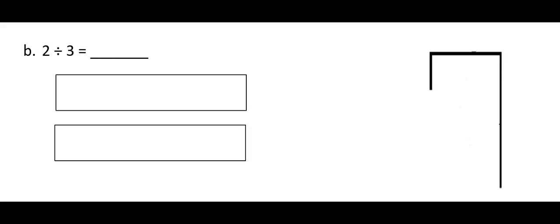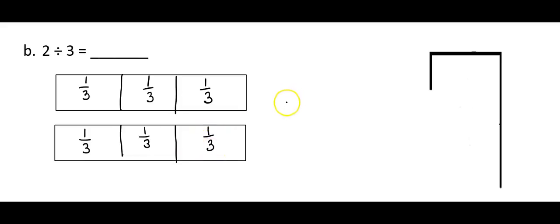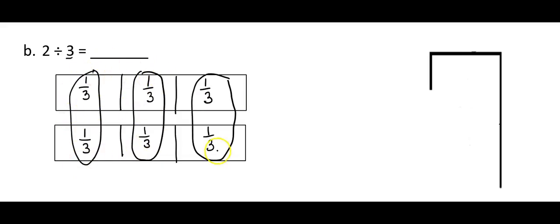Here I have the problem 2 divided by 3. I'll use the same pictorial representation from lesson 2. I'll start with my two tape diagrams representing the two wholes, then divide each one into three equal pieces. I'll label each piece as 1 third. Once I'm done labeling, I divide the entire diagram into three equal groups — one group, a second group, and a third group. My answer is the amount in one group, which is 2 thirds.